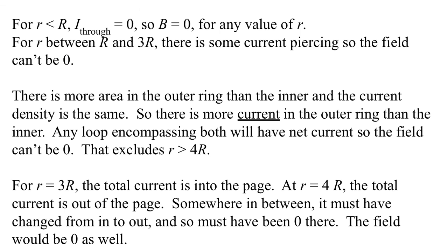The question then is: could the field be zero somewhere between 3R and 4R? At r equals 3R, the entire inward current is captured. But there's more outward current than inward, because the outer ring has more area. So somewhere between 3R and 4R, the net piercing current must pass through zero — the inward current is exactly counteracted by some portion of the outward current. Therefore, there must be some value of r in that region where the magnetic field is zero.